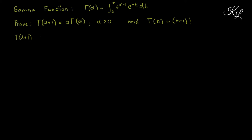Γ(α+1) is equal to, by definition of the gamma function, the integral of t raised to (α+1−1), then e raised to negative t, dt, from 0 to infinity. Now, +1−1 equals 0, so we can cancel them out, and we're left with the integral of t raised to α, e raised to negative t, dt, from 0 to infinity.